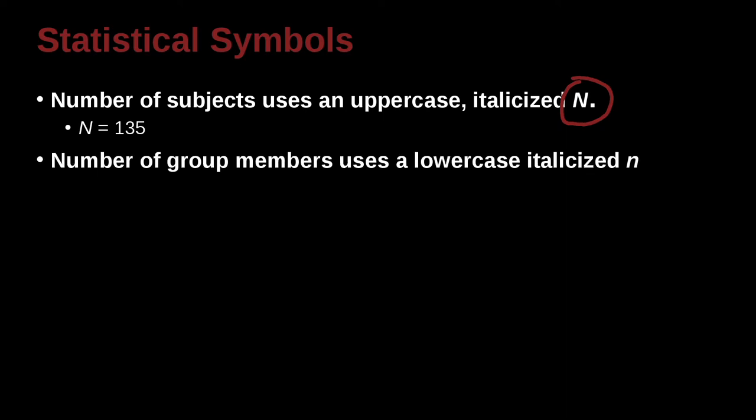You have a group membership, which would be a subgroup, a subsample. For that subsample or group, you use a small n. Big N is the overall sample, small n is the subgroup sample. Pay attention to that n—it's a small n, but it's italicized.